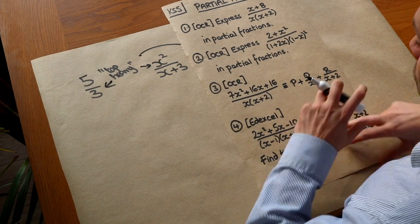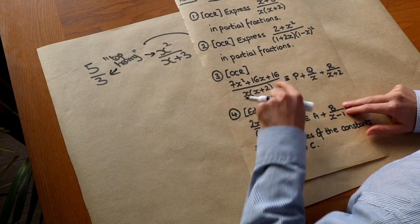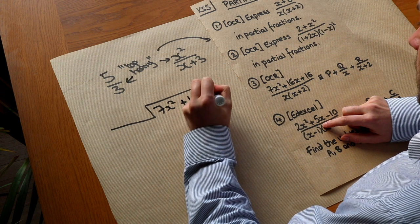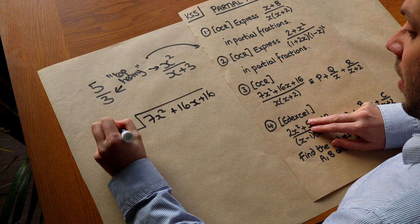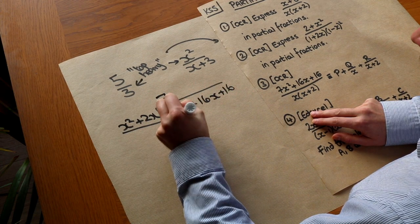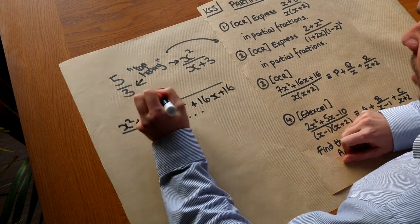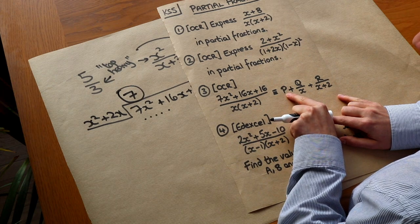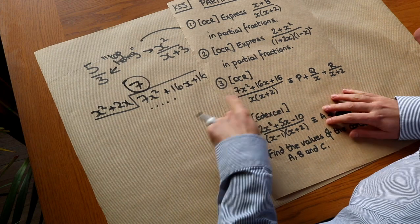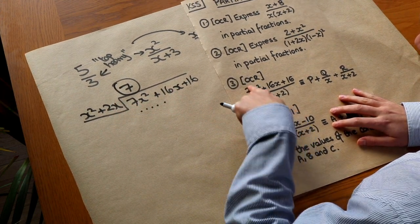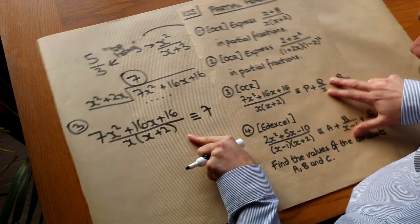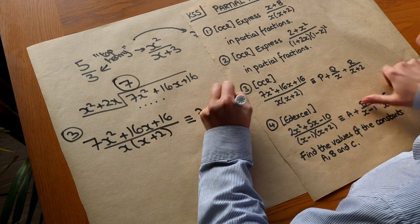There are two ways of doing it, but one is much easier. We first imagine doing long division. If we divide (7x²+16x+16) by x(x+2) = x²+2x, the quotient is just 7x² divided by x², which is 7 — we won't get anything else in the quotient. The quick way to see this is: look at the highest power terms top and bottom; 7x² divided by x² is 7, so the quotient P = 7. Now I'll write it out with P replaced by 7: that's 7 + Q/x + R/(x+2).